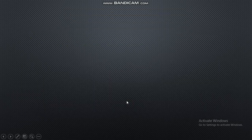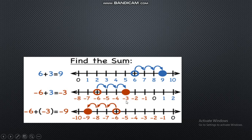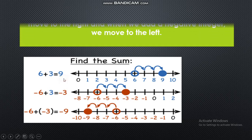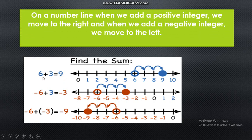Next we are going to study how to find addition using the number line. Take the example 6 plus 3. I find 6 on the number line and take 3 jumps to the right hand side — I get the answer 9. So on a number line, when we add positive integers, we move to the right hand side. For minus 6 plus 3, take 3 jumps to the right hand side, we get minus 3.